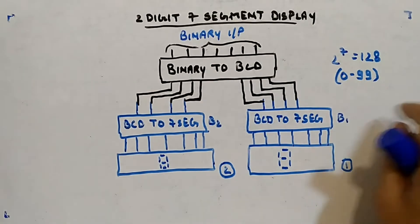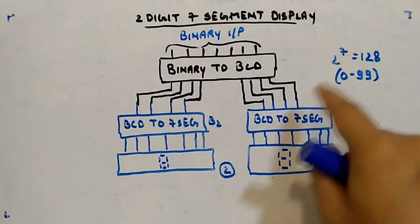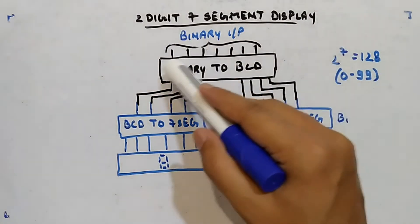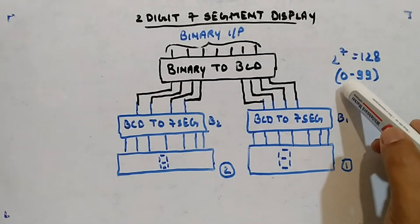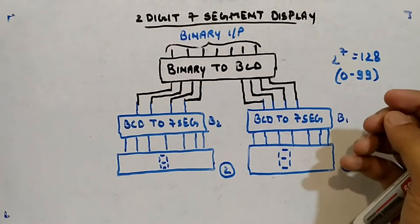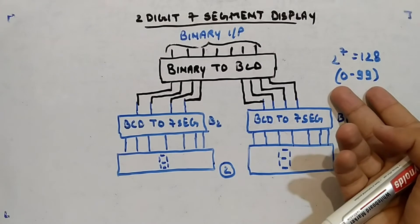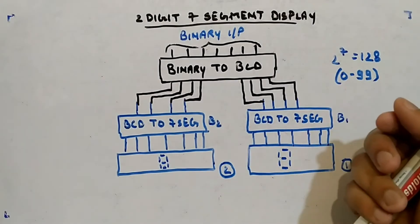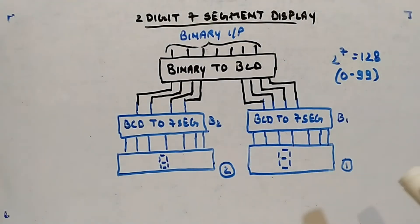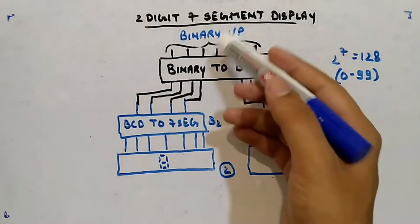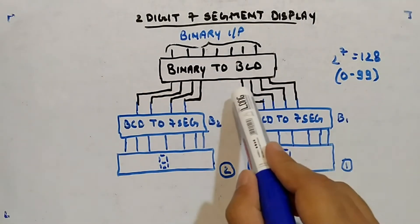How many inputs will be required? The binary input will need seven bits. Because 2 to the power 7 is 128, and we are counting from 0 to 99. To represent 0 to 99, you need seven bits so that you can represent 99. That is how I decided the input bits. The output of this block is eight outputs.